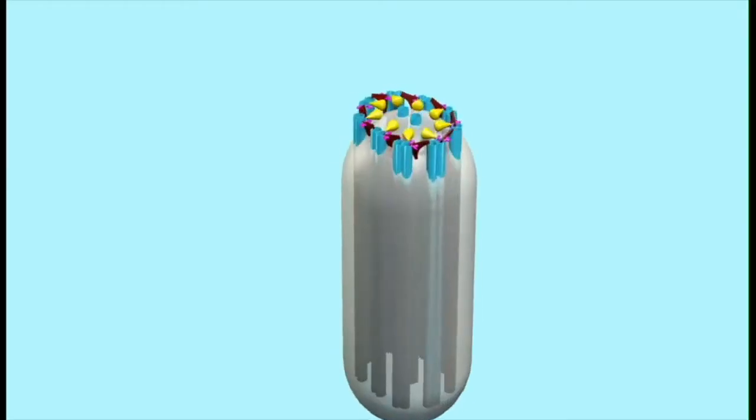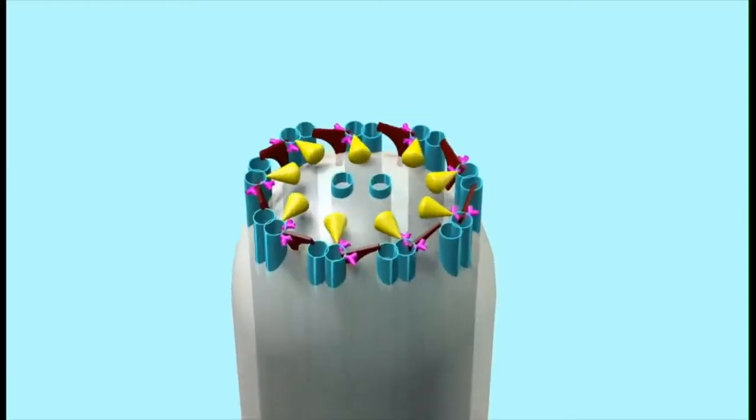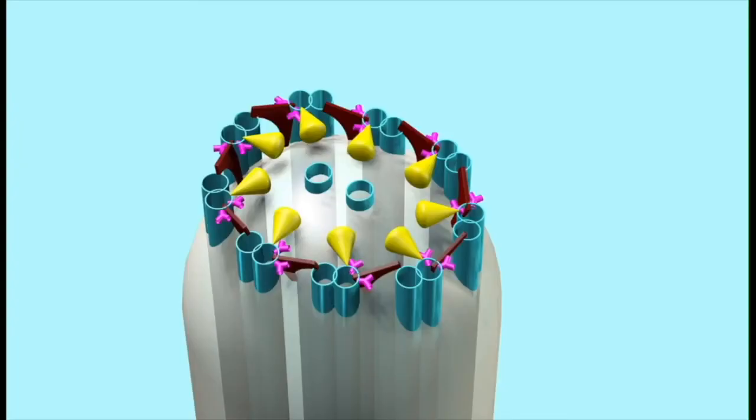Stereocilia exist in the auditory and the vestibular system. Lastly is the flagella or flagellum. Flagella are long, thin, and whip-like appendages attached to a bacterial cell that allow for bacterial movement.